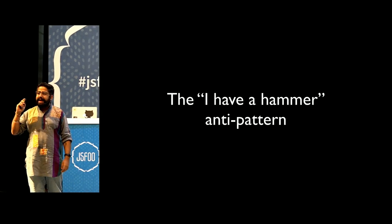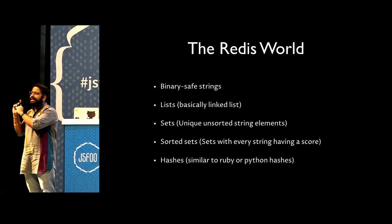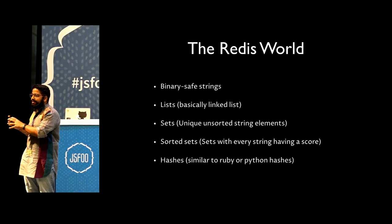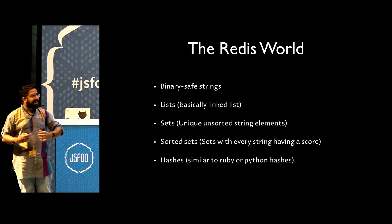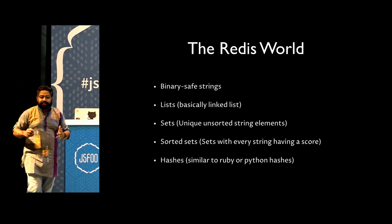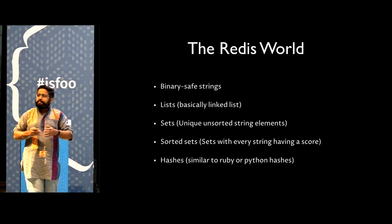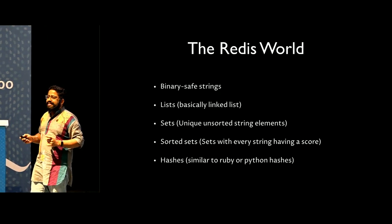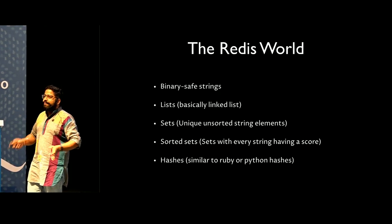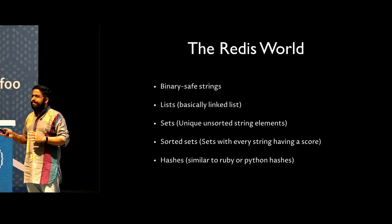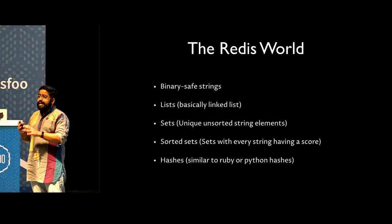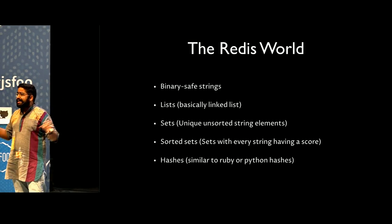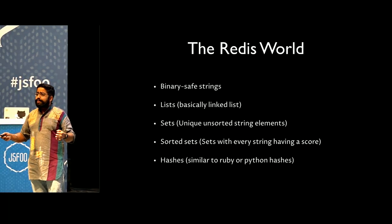The moment you tell anybody Redis, they'll say cache, key value - and that is where the definition of Redis stops. But the beauty of Redis is that it does a lot of things pretty well. You have binary safe strings, the most basic Redis data structure. You can put any amount of data - the upper limit right now is 512 MB - whether it is a JPEG file, text, whatever you have, you can just put it in strings.